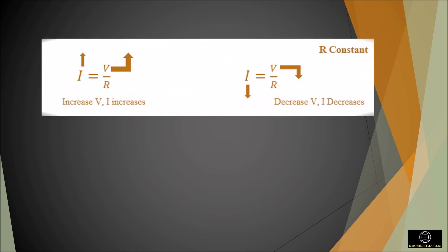In a circuit, for a constant resistance value, if the voltage applied is increased, the current will also increase, and if the voltage is decreased, the current will also decrease. For example, if the voltage is doubled, the current will also be doubled.